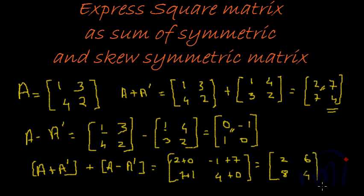Here we have 2 common across the thing. So, which is equal to 2 times of A. So, what does it say? It just says that A can be expressed as a sum of A plus A dash and A minus A dash.